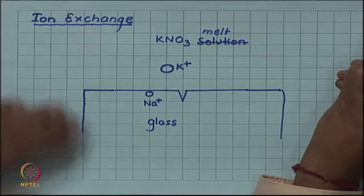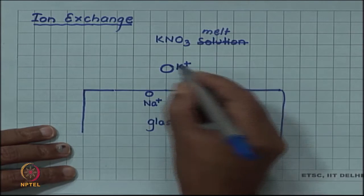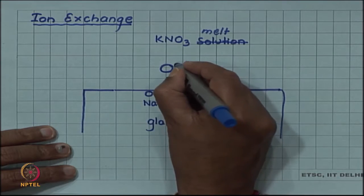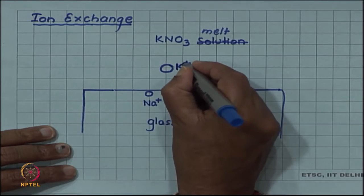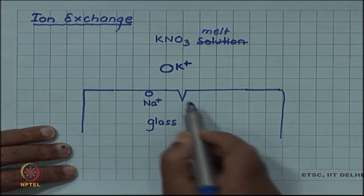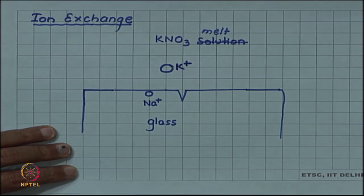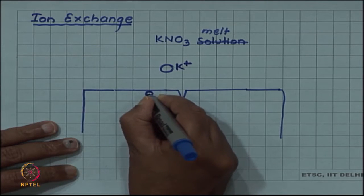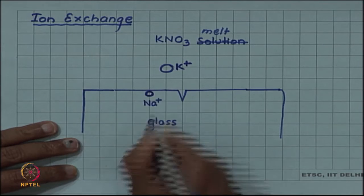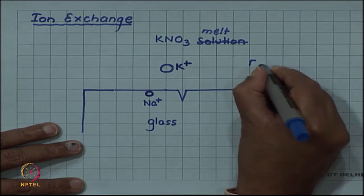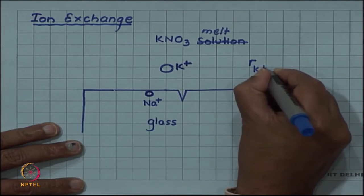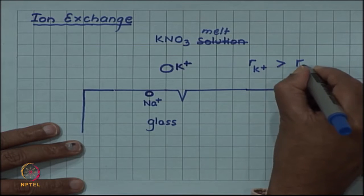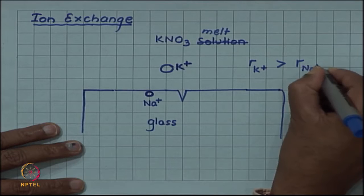It is exposed to KNO3 melt in which KNO3 gives us potassium ion K+ ions. The glass is a soda lime glass and had sodium ions in the glass surface and the radius of potassium ion is larger than the radius of sodium ions.